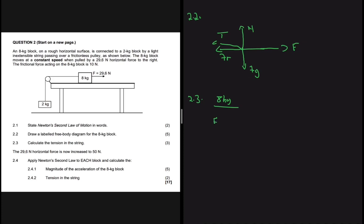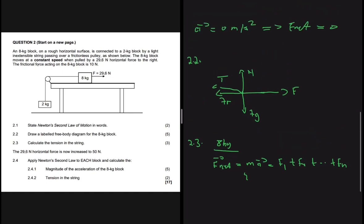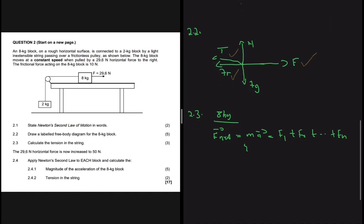We apply Newton's second law of motion: F_net = ma, which also equals the sum of all forces. The forces acting horizontally on the 8 kg block from the free body diagram are: the applied force, the tension, and friction. Writing that out: F_applied + T + F_friction = 8 × a.